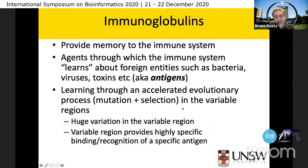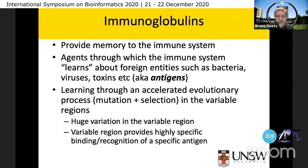The antibody variable regions emerged through this accelerated evolutionary process — this combination of mutation and selection in the variable regions — which means that there's a huge variation in the variable region of the antibody. It provides highly specific binding and recognition of a specific antigen.